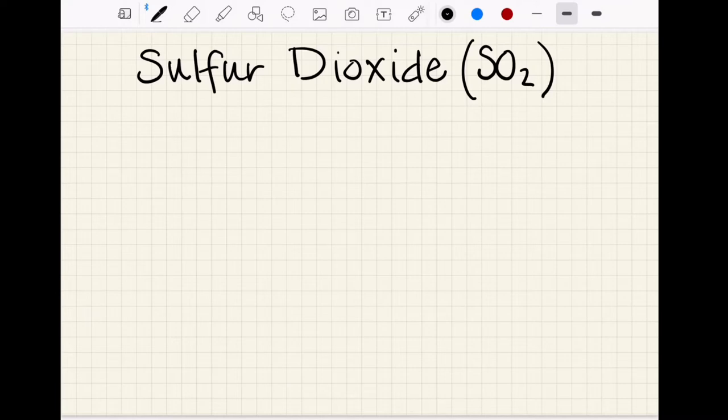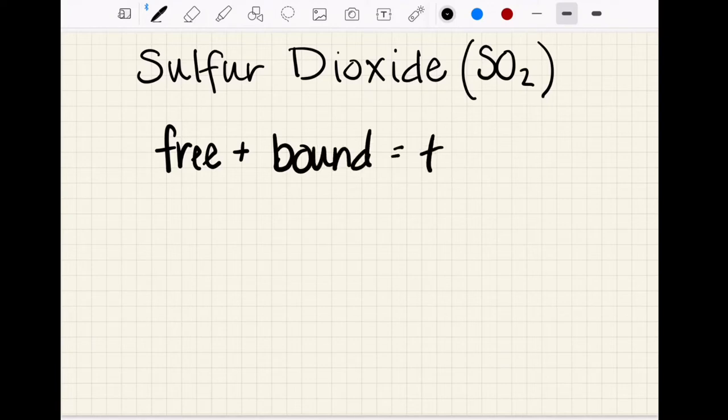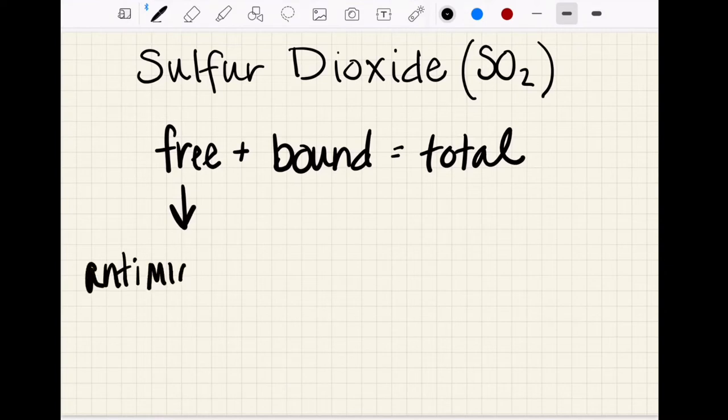We could do chemistry all day but we're really going to focus on the math today, so we're just going to give a quick background on the chemistry. Sulfur dioxide exists in three forms: free, bound and total. The free is important because it provides the antimicrobial action and also acts as an antioxidant.